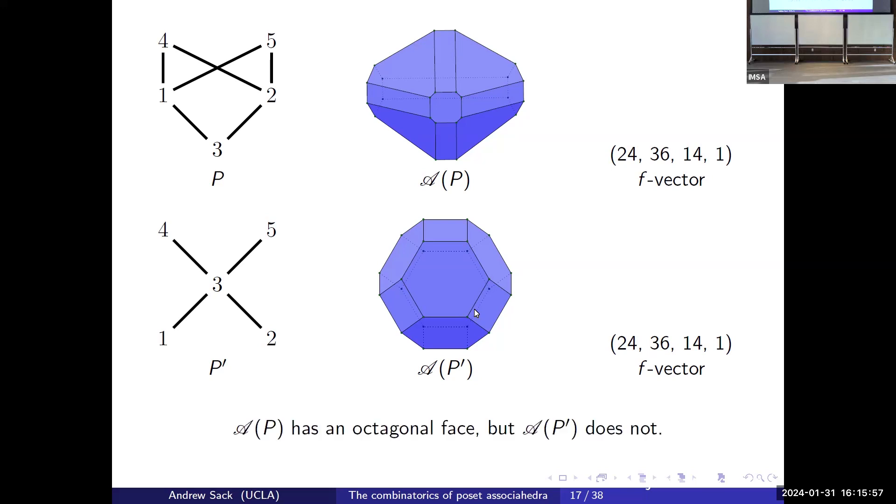Exactly. The bottom one is the order polytope. Actually the real realization of this one was too ugly, so I wanted to make it more obvious. But yes, and in fact we have posets that have the same F vector but are not combinatorially equivalent.